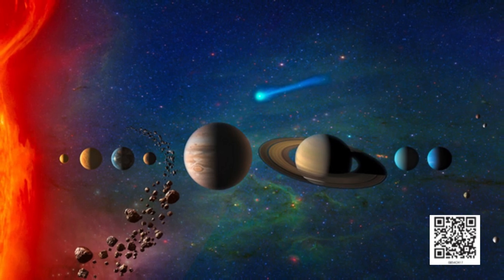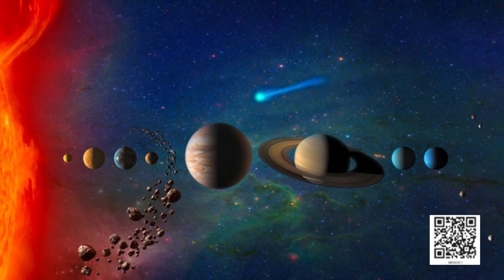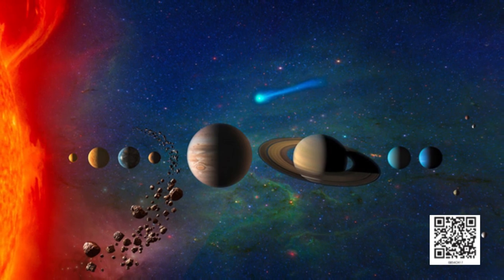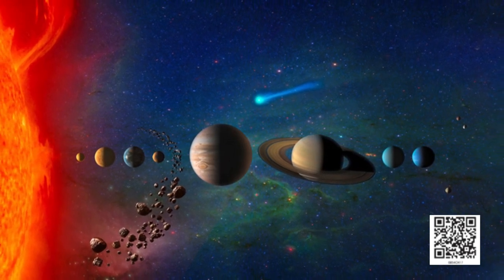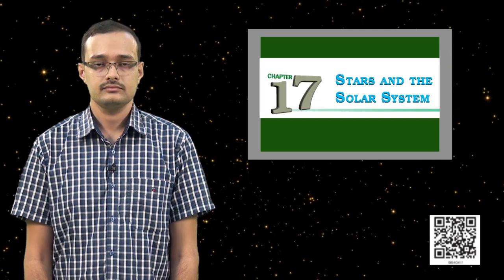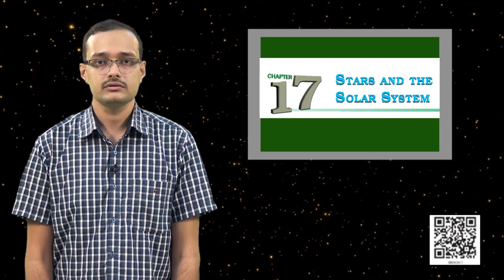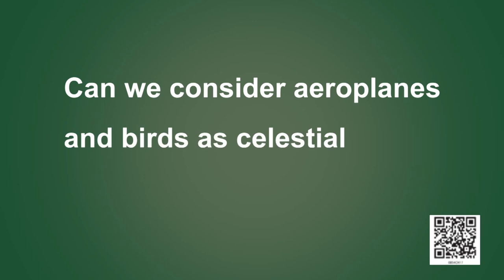A celestial object is any natural object or formation in the sky. The moon, the stars, the sun are all celestial objects. Now, here is a question for you. Can we consider aeroplanes and birds as celestial objects? Why?